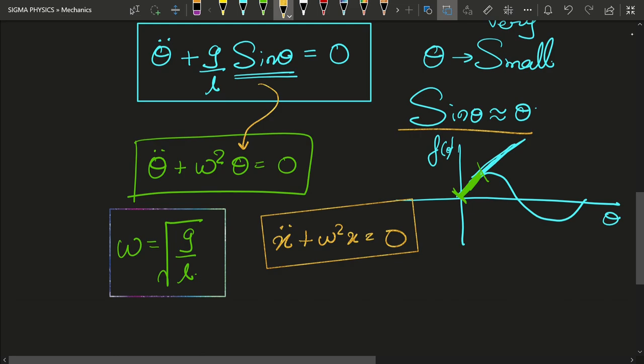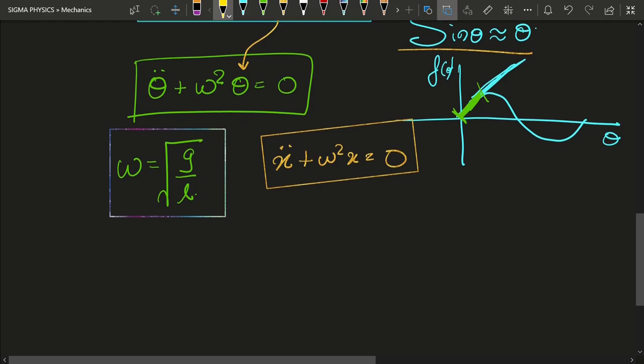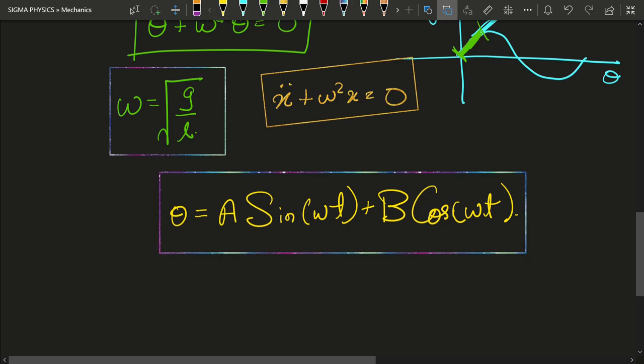If we displace the pendulum by only a small angle θ, we can replace sin θ with θ, and then we will get simple harmonic motion in polar coordinates. Isn't that just amazing? Now since we have the equation of motion, the solution for this equation would be exactly the same as that of the spring-mass system, with θ replaced by x. You are going to get θ = A sin(ωt) + B cos(ωt). Now you might be wondering what are these A's and B's, right? What are these A and B?